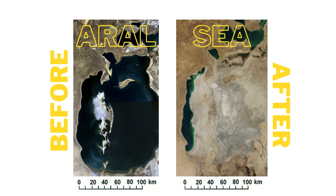Take a look at the Aral Sea in Central Asia. The region around it is a major cotton producer, and the diversion of two rivers flowing into it for irrigation has caused it to almost disappear.